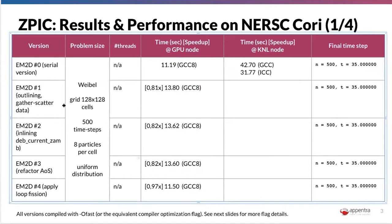You can see that applying outlining and gather scatter has an increment in the runtime because you are copying data to temporarily allocated memory. So you are consuming more memory and more CPU cycles to make the copies of the gather and the copy back of the scatter. So this is something that is expected.